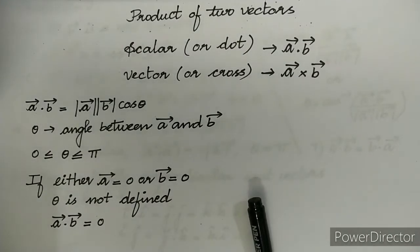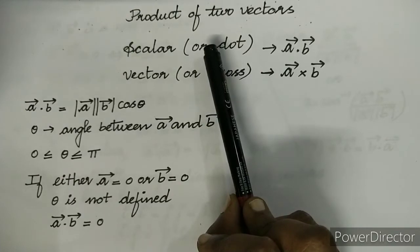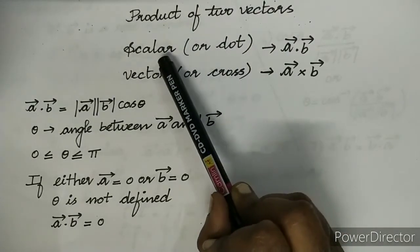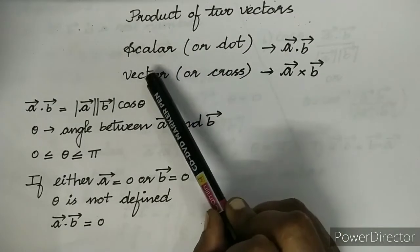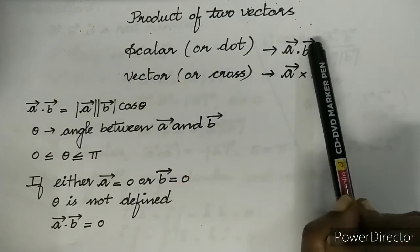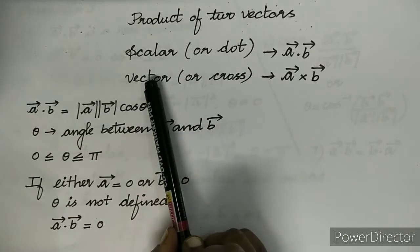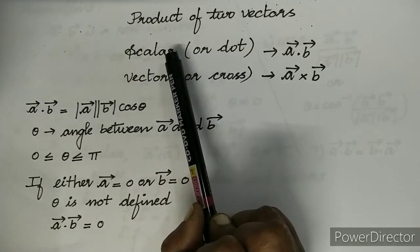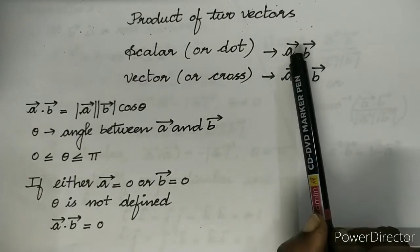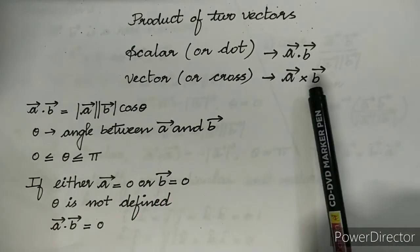Hello students. In this video we will learn product of two vectors. We have already studied addition and subtraction of two vectors. Now we are going to learn product of two vectors. In finding the product of two vectors we have two ways: one is scalar or dot product of two vectors, and another one is vector or cross product of two vectors. The scalar product result will be scalar, and the cross product result will be a vector. The scalar product is denoted by A·B and the vector product by A×B.